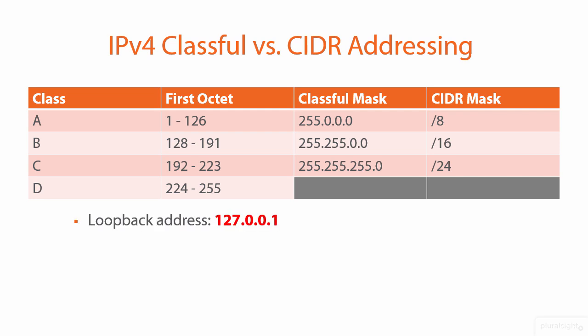The loopback address is a reserved IPv4 address — there are actually IPv4 and IPv6 loopbacks. You need to know that the IPv4 loopback is 127.0.0.1, and this is used for diagnostics. It's a good idea when testing connectivity to do a ping on 127.0.0.1. If you get replies, you can have a sanity check that the TCP/IP protocol stack works on that machine.